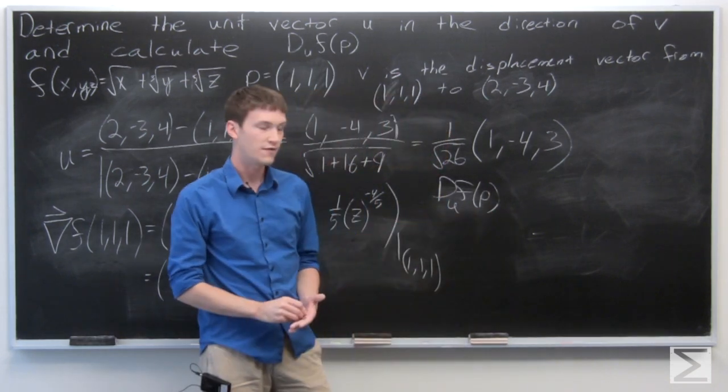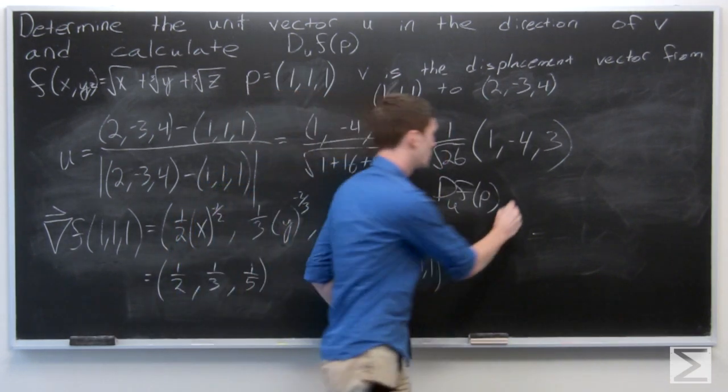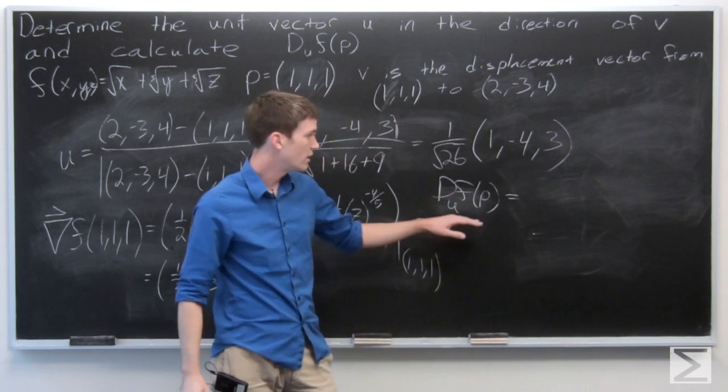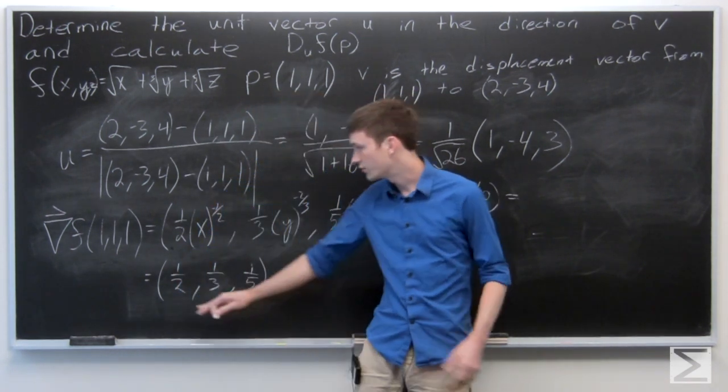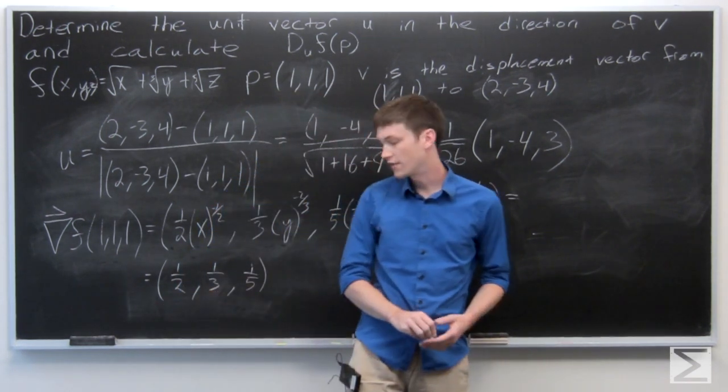The directional derivative of f at p in the direction of u is equal to the gradient vector of f at p, which we calculated as ½, ⅓, ⅕.